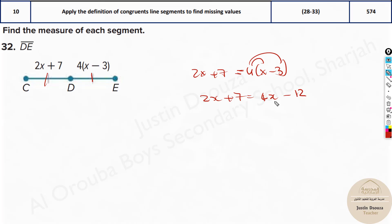And now let's group the X together and the numbers together. I take the 12 to the other side. It becomes plus 12 plus 7 equals. This 2X goes to the other side 4X minus 2X. 12 plus 7 is 19 equals 2X. Divide both the sides by 2. You will get 9.5 equals X. That is the answer.